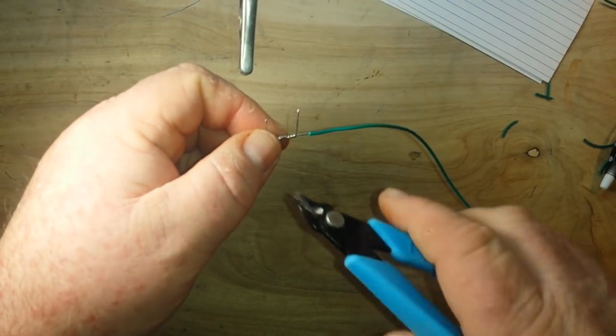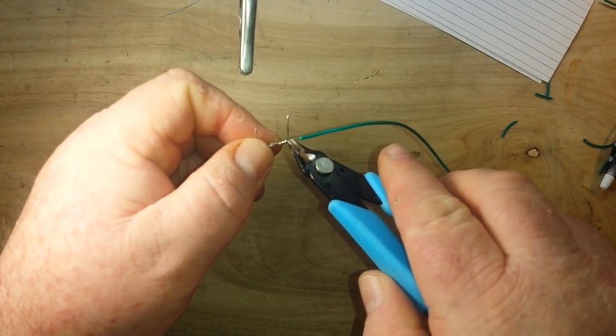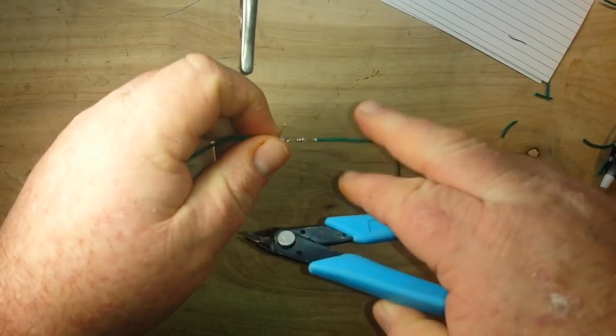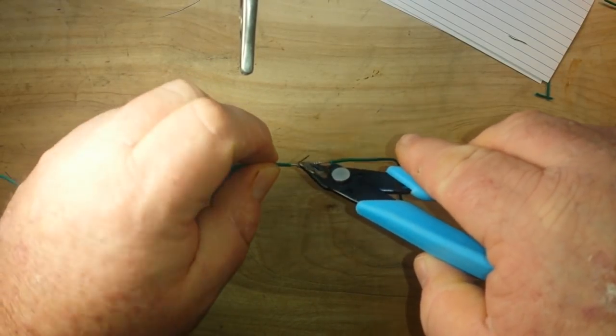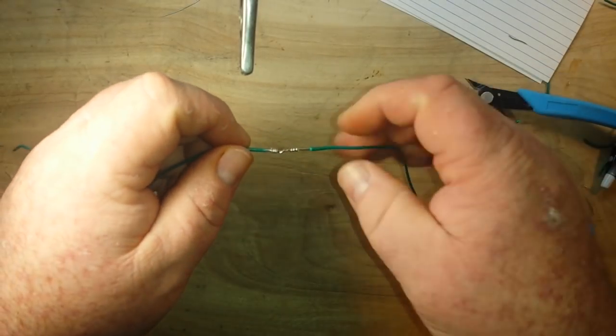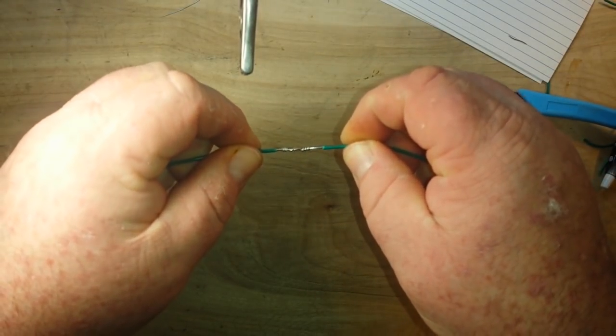Once that's done, you're going to take a pair of flush cutters and you're going to get in there and knock off those ends so that nothing is sticking out. Now that is going to be a tight joint.